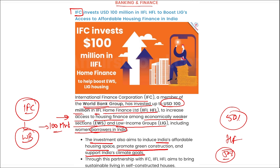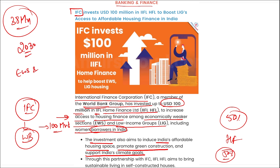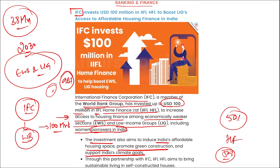India's rapid urbanization has intensified the need for affordable housing, with an estimated requirement of 38 million housing units by 2030. EWS (Economically Weaker Section) and LIG (Low Income Group) segments represent over 96% of these housing needs.